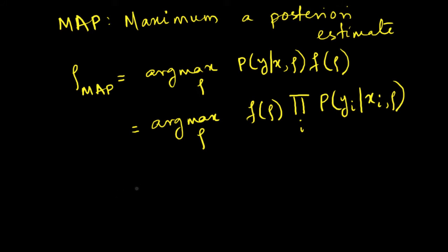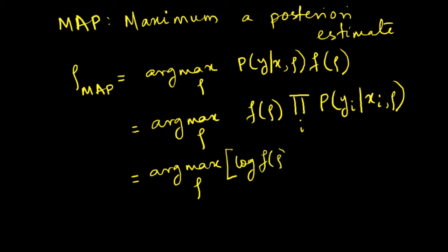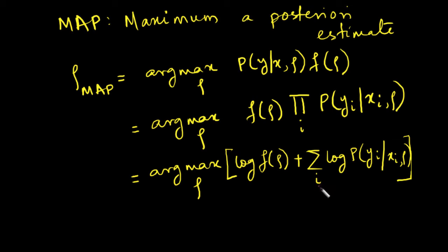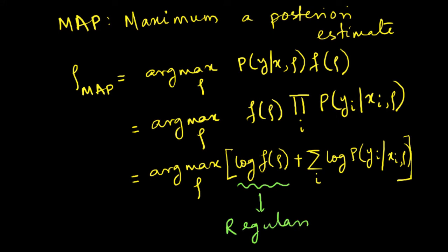Like the maximum likelihood estimator, dealing with products is complicated. So we again take a log, because maximizing a function is exactly the same as maximizing its logarithm. This gives us argmax over rho of log of f of rho plus the summation over i of log of p of y_i given x_i and rho. This is exactly the same as what we had in the MLE case, with the only difference being this additional term log of f of rho, which is what we also call regularization in the machine learning literature — and this helps in preventing overfitting.